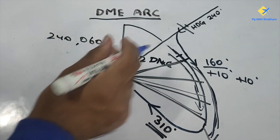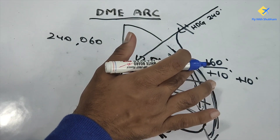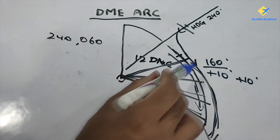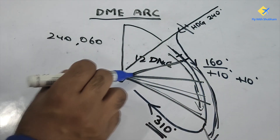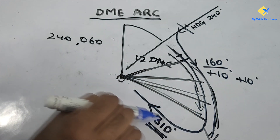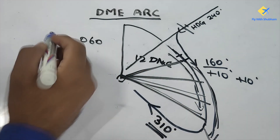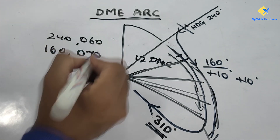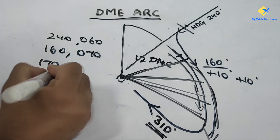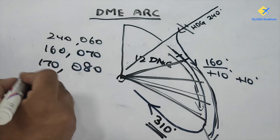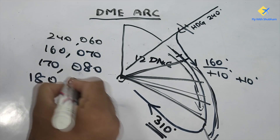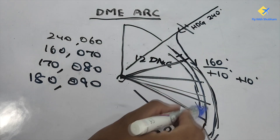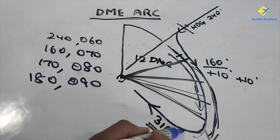You subtracted 80 degrees to intercept the DME, and now you add 10 to both the heading and the course to get your next crossing radial, then the next, then the next, until you intercept the final approach course. So the sequence is: heading 160 / course 070, then 170 / 080, then 180 / 090 and so on, until you have crossed all the radials and reach the final approach course.